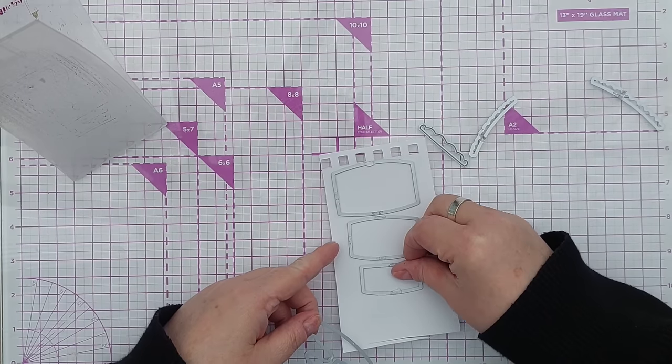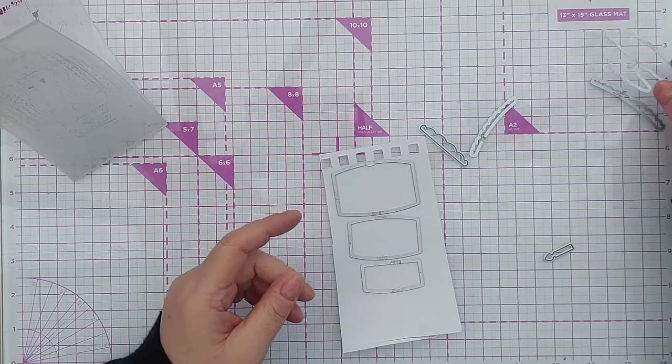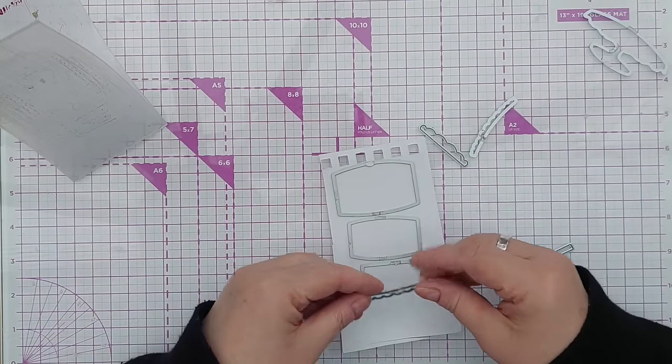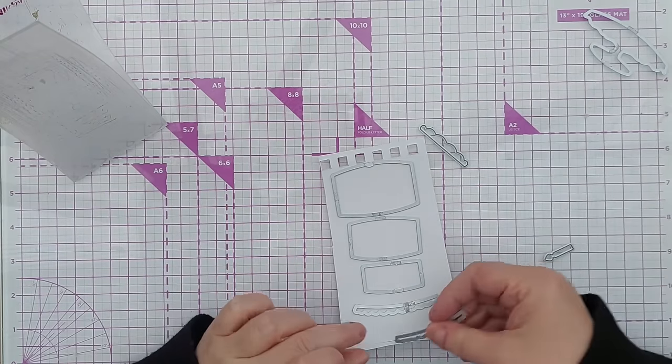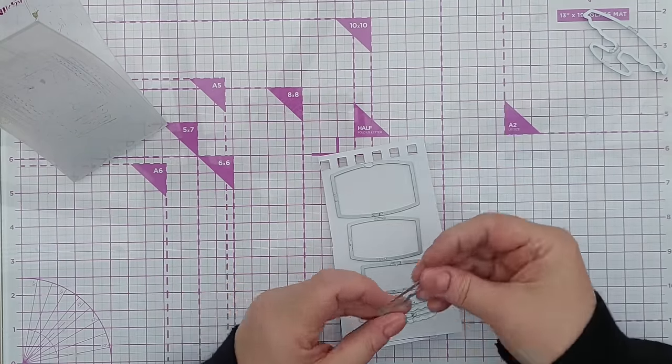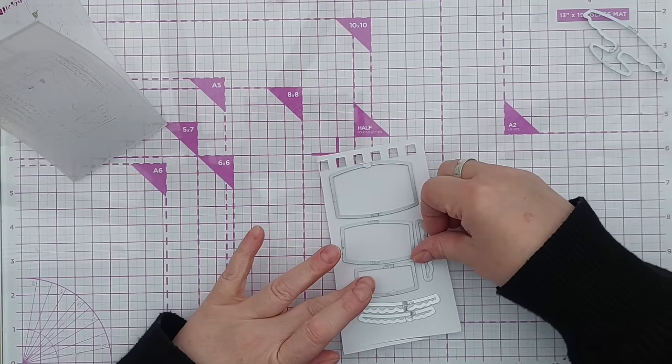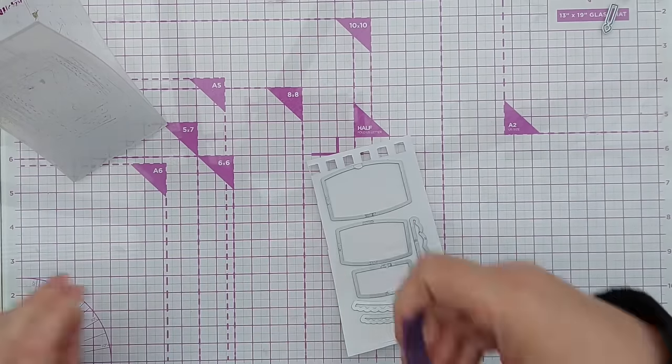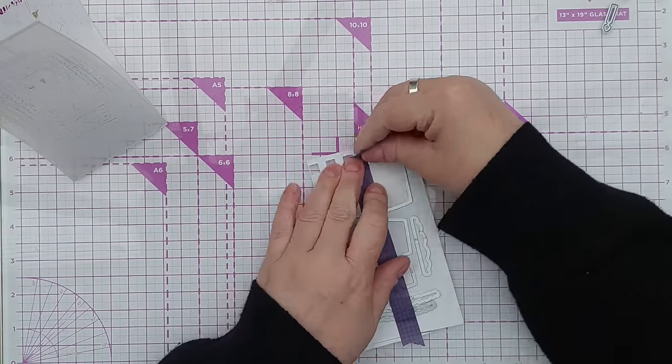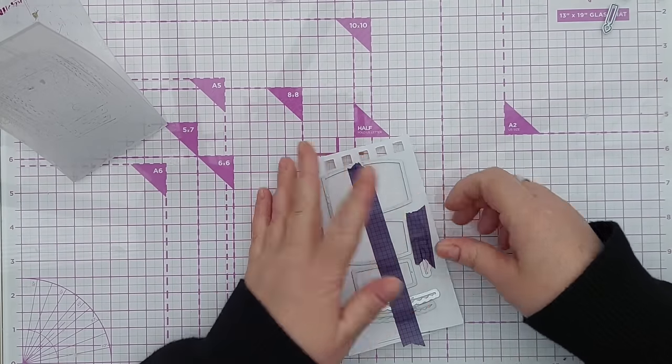Today I'm working on mixed media paper because I'm going to do some ink blending with Catherine Pooler inks, and I find that dye inks just blend much better on mixed media paper because it's got a coating on it that stops the dye inks from soaking in too quickly.